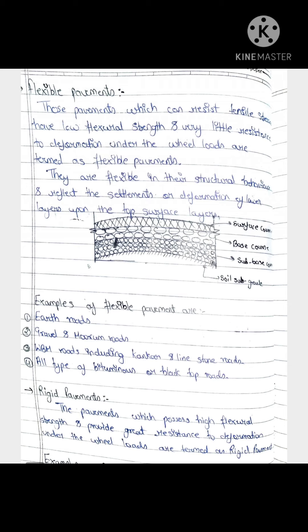You can see there are 4 layers: soil subgrade, subbase, base course and surface course. When the load is applied, the layers will deform. The example of flexibility includes earth roads, gravel roads.